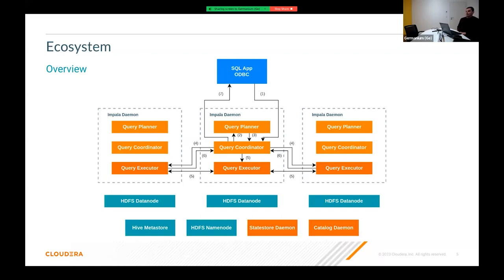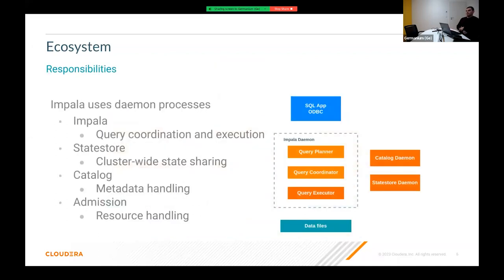It can be configured differently for bigger setups. The data layer consists of HDFS data nodes in the classic case, but Impala can work with various other Hadoop-supported data stores. There are two other components: the state store daemon and the catalog daemon. The Impala daemon handles query coordination and execution; the state store manages cluster-wide state sharing; the catalog handles metadata; and the admission daemon manages resource handling.